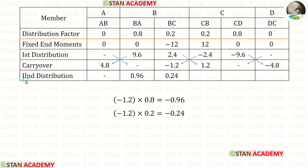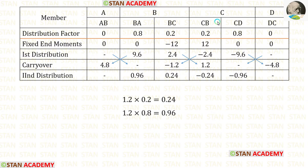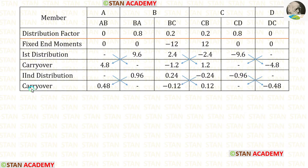Now let us do the second distribution. First let us do it in joint B — we have to multiply this value with the distribution factors. When we do that we are getting positive values, so we have to enter them as positive. Now let us do the distribution in joint C — we have to multiply this value with the distribution factors. When we do that we are getting positive values, so we have to enter them as negative. Now let us do the carry over by dividing these values by 2 and entering the answers.